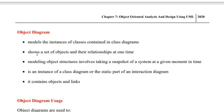Good morning to all of you. I hope all of you are doing well. In today's class we are going to discuss about object diagram. Object diagram is a diagram in UML that is capable of highlighting instances of classes that are included in the class diagram — that is, it is capable of representing objects of the classes that are participating in the class diagram. An object diagram is a diagram that represents a set of objects and their relationships.